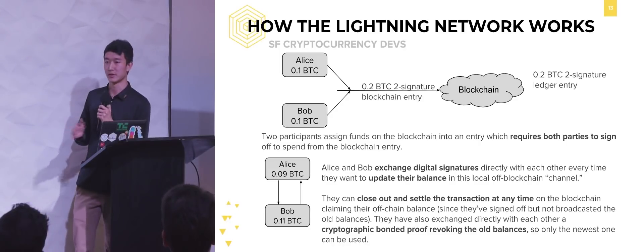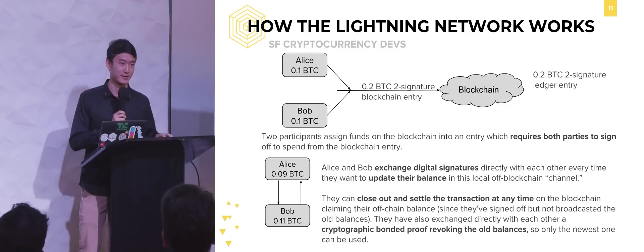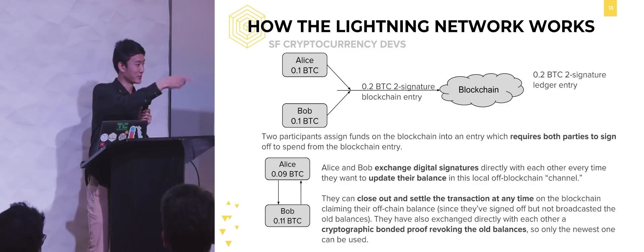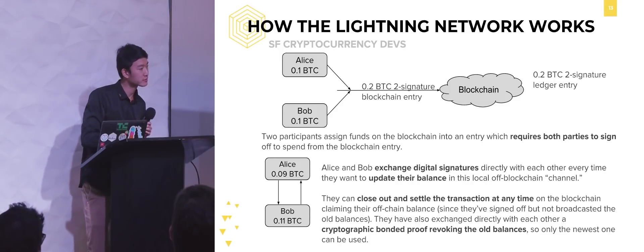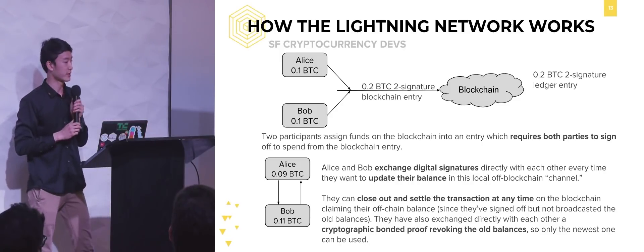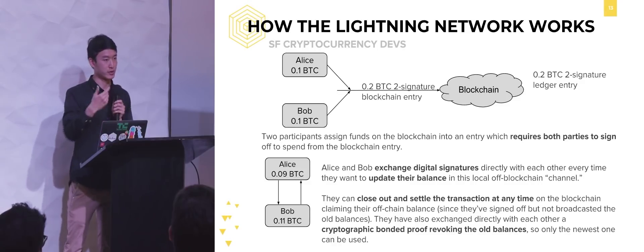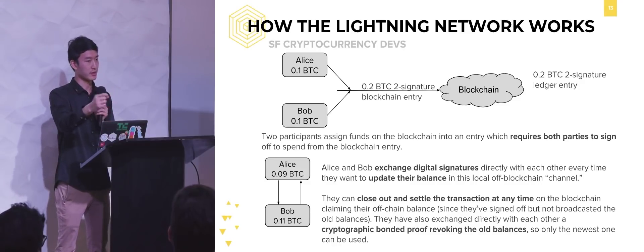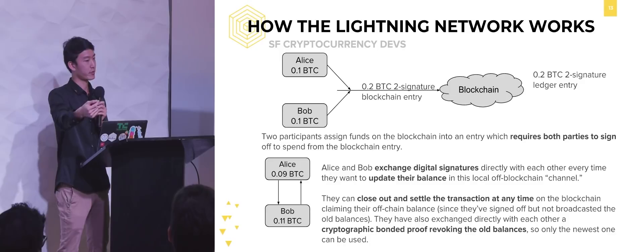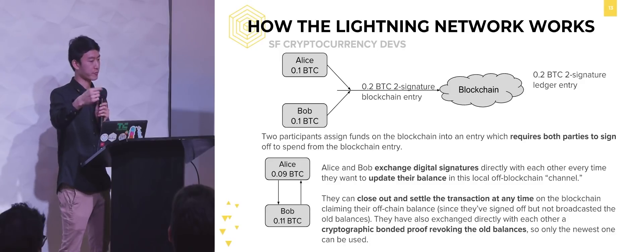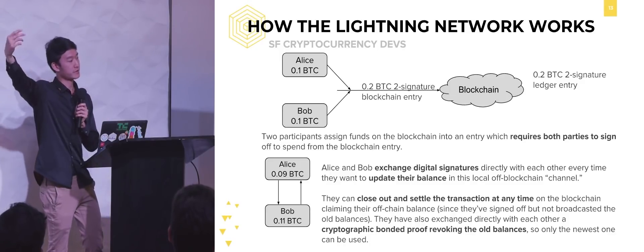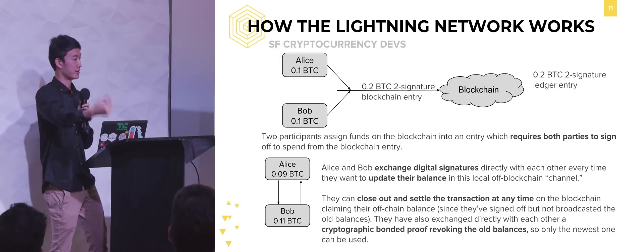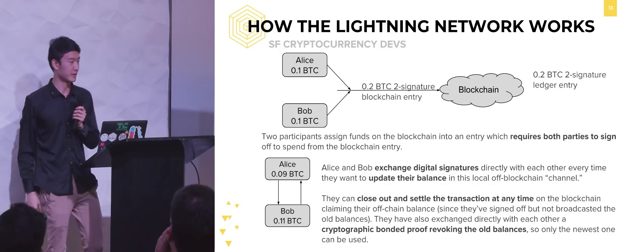Q: Is the channel a data structure stored on-chain or off-chain? The channel itself is a transaction — one Bitcoin transaction with an output that represents the total amount in the channel. What you're actually doing is updating an off-chain transaction that is spending from this on-chain one. Q: So does it take half an hour to create a channel? Yes, that is true — you want to wait six confirmations to create a channel.